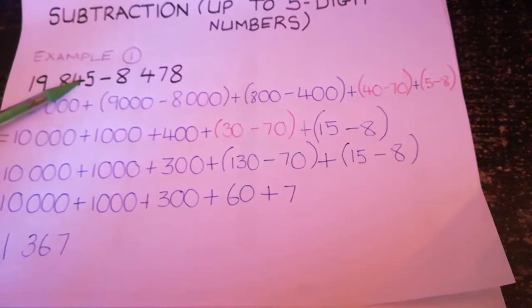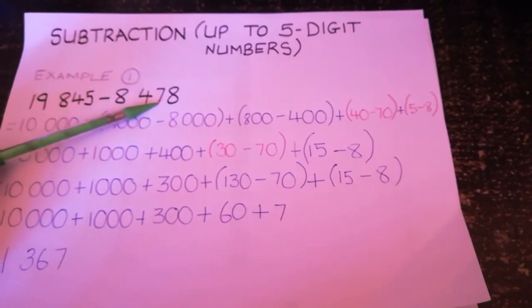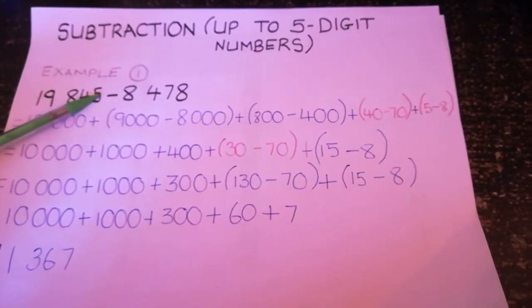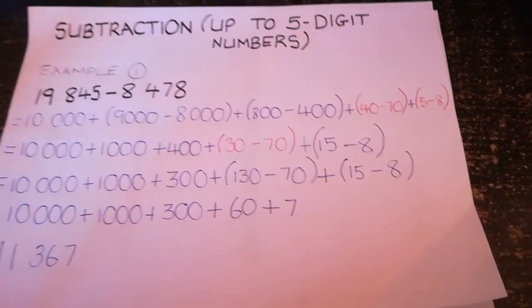Plus, in our tens column, 40 minus 70. I know 40 cannot minus 70, but I'm going to show you how to borrow afterwards. And then in our units column, we have 5 minus 8. 5 cannot minus 8, so I'm going to show you what to do next.